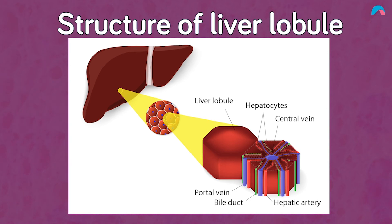At each corner of the hexagonal lobule there's a portal triad. This is made up of a portal venule supplying blood and nutrients from the portal system, a hepatic arteriole supplying oxygenated blood from the arterial system, and a bile canaliculus which drains bile into the bile duct.